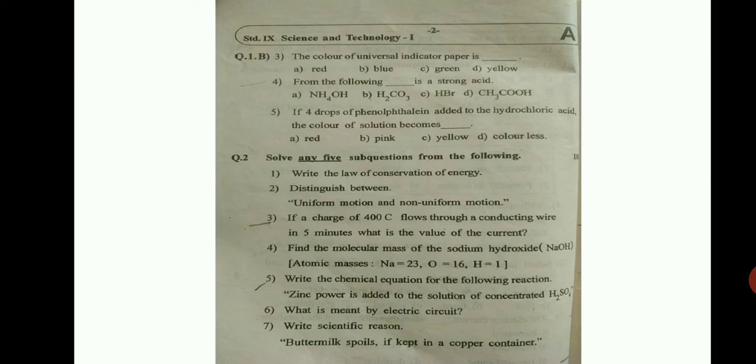Write the chemical equation for the following reaction. Zinc powder is added to a solution of concentrated H2SO4. What is meant by electric circuit? Next, write scientific reason, buttermilk spoils if it is kept in copper container. A very important instruction. When you are writing extra questions, like if it is said any 5 and in case you are writing all the 7s, please do write extra on the extra question. So it becomes easy for the teacher for correction.